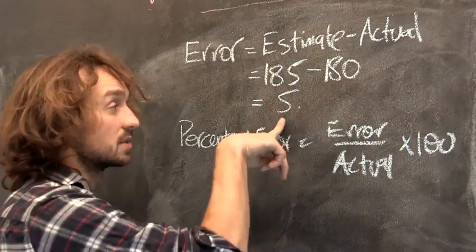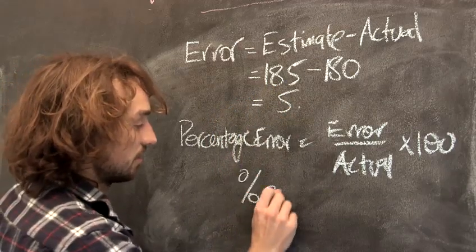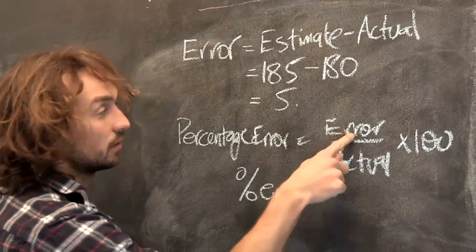My actual height is 180 but you estimated I was 185 so your error was 5. So my percentage error is my error which is 5.